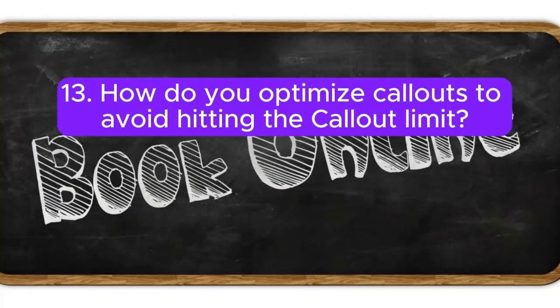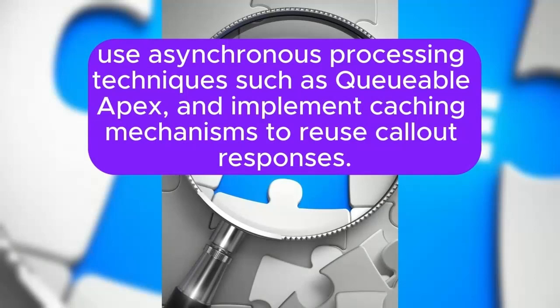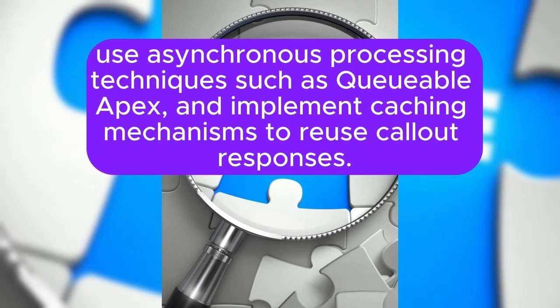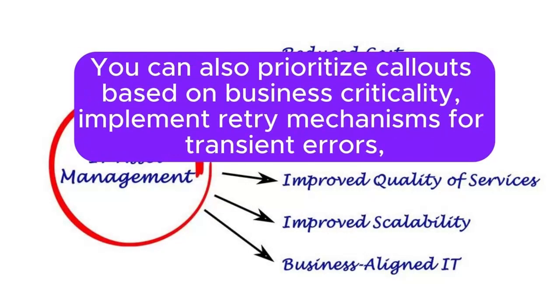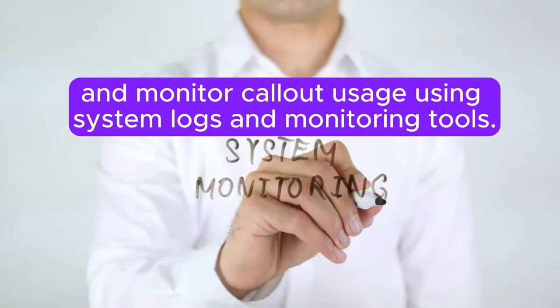Question 13: How do you optimize callouts to avoid hitting the callout limit? Answer: To optimize callouts, you can batch callouts into smaller batches, use asynchronous processing techniques such as Queueable Apex, and implement caching mechanisms to reuse callout responses. You can also prioritize callouts based on business criticality, implement retry mechanisms for transient errors, and monitor callout usage using system logs and monitoring tools.